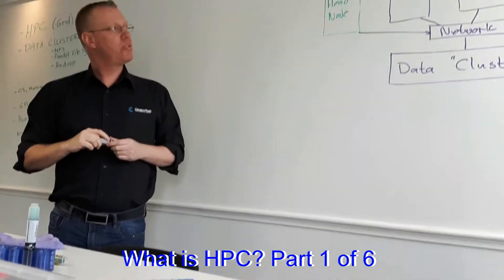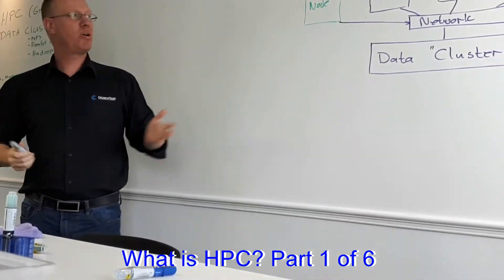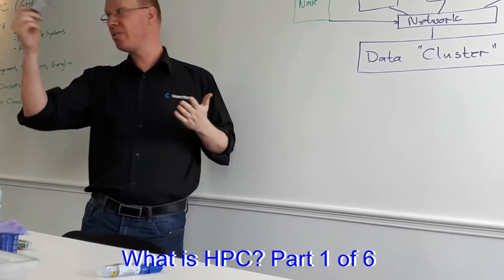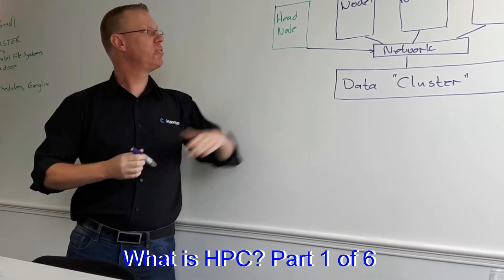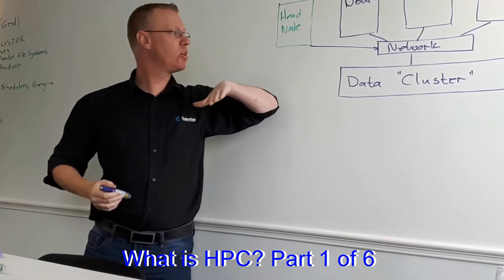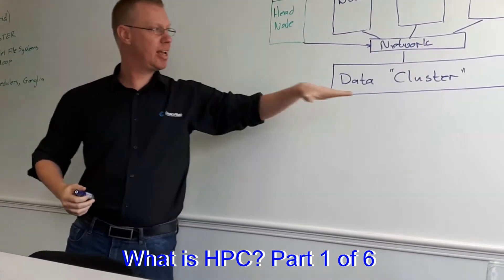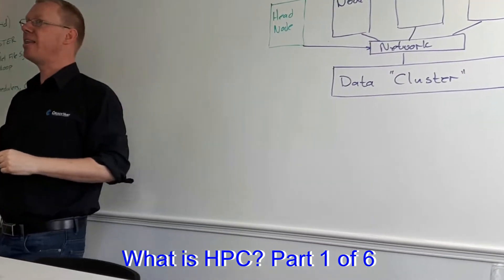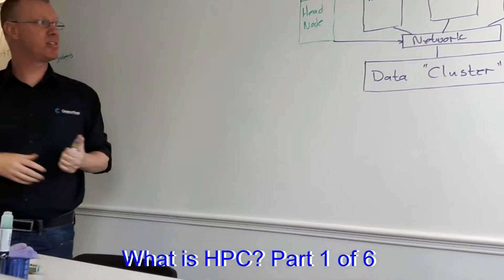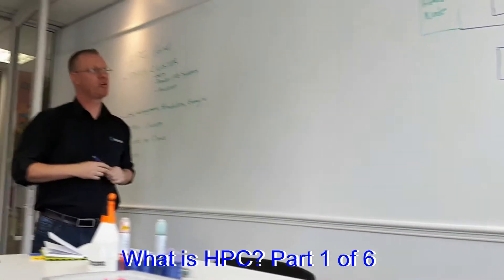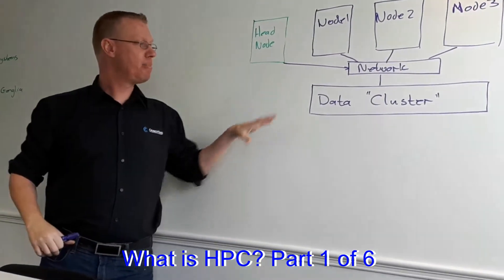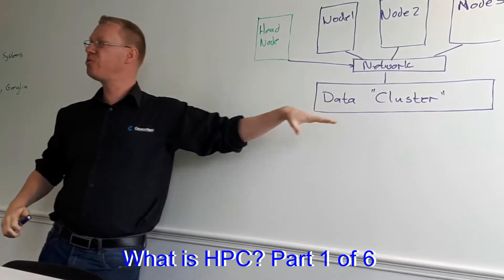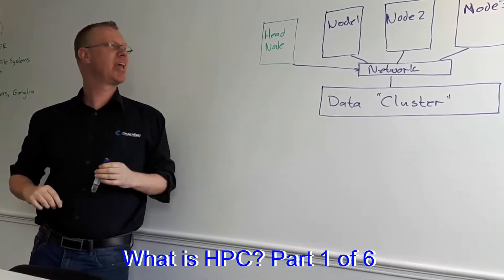So those are pretty much the basic components. You've got network, and various reasons why you choose various different types of networks. You've got your compute nodes, and you've got a head node to do the management, and a data cluster. And that is the basic structure of high performance computing. All that really happens is that this then just expands to thousands, and this becomes a separate sort of entity.